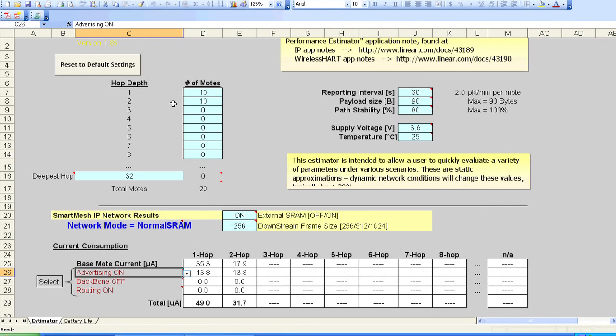In my 20-mote network with the standard network configuration, the Power and Performance Estimator tells me that my one-hop motes will be consuming about 49 microamps, and the two-hop motes will be consuming about 32 microamps. If I turn off network advertising, the power consumption drops almost in half. The second thing I can do is turn down the speed of downstream communication. When I change the downstream frame size from 256 to 1024, power consumption drops again.